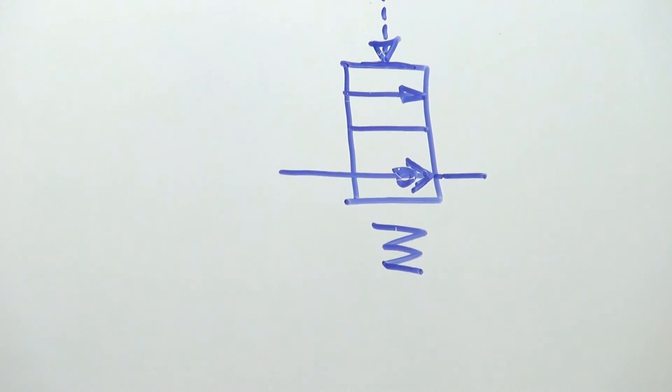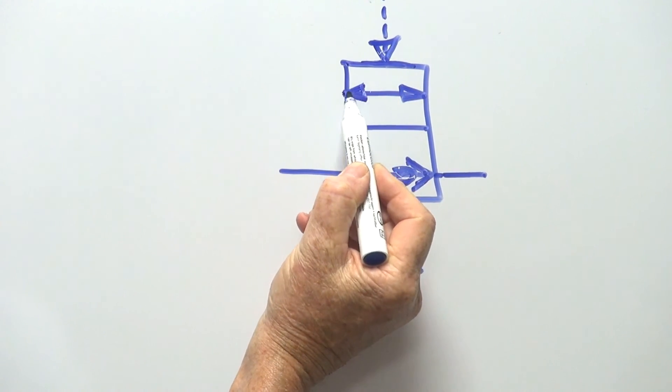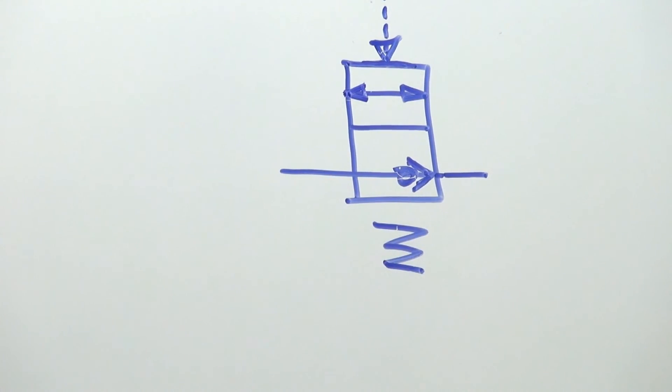In this particular case, we can actually get flow in both directions. So by rights, that should really be like that, so it's got an arrow in both directions up here.